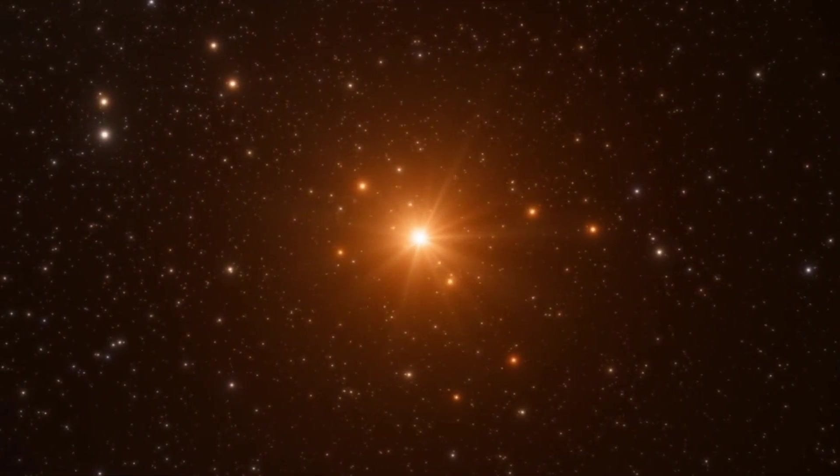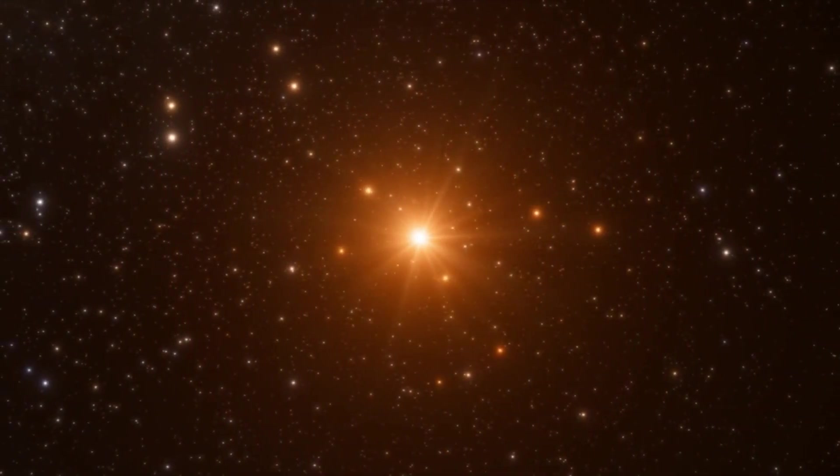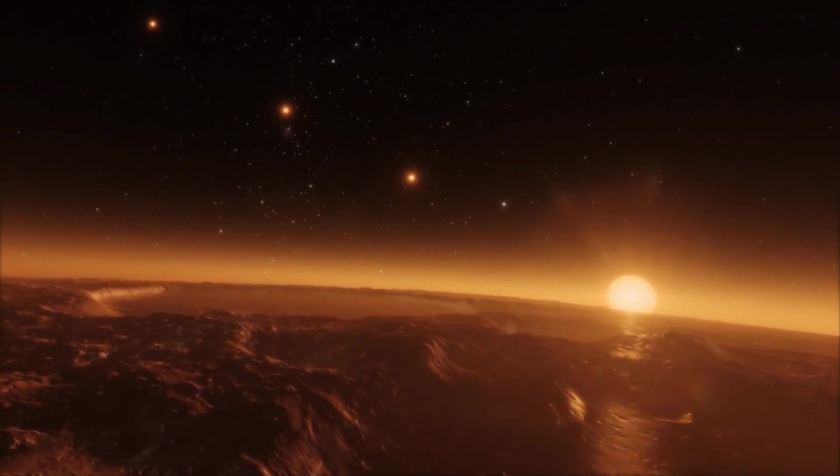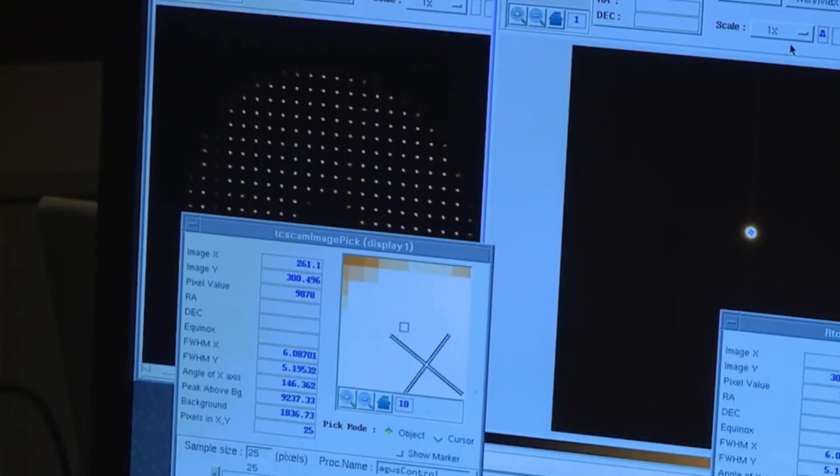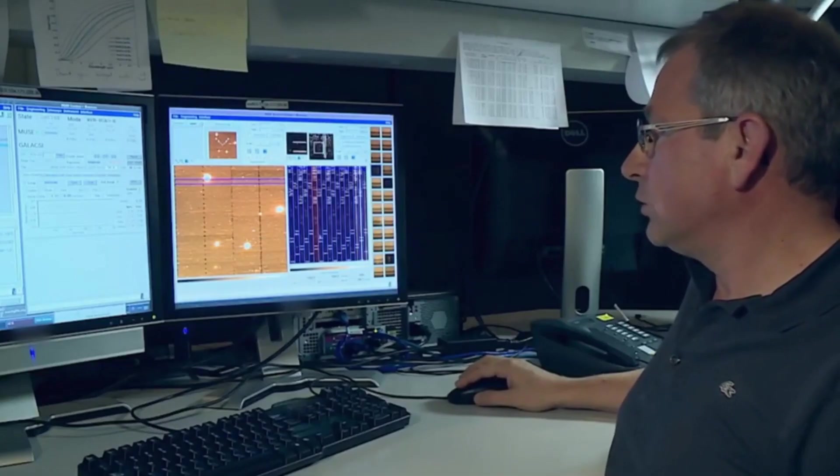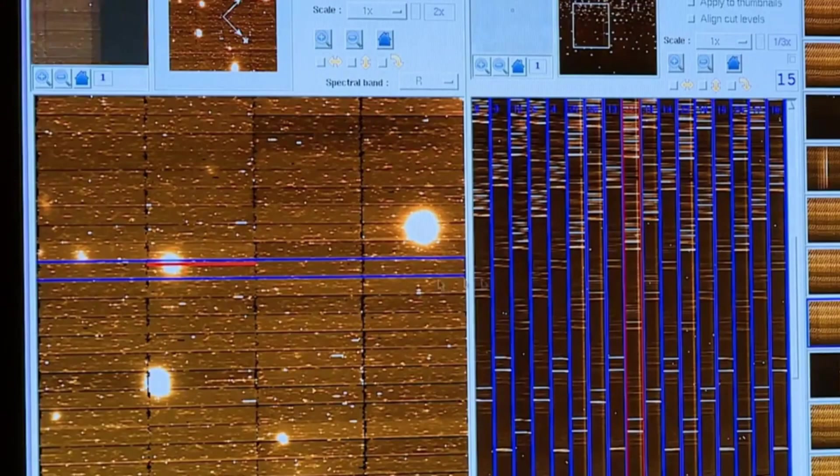It turns out that seven Earth-like planets have also been found around the star Trappist-1. More than 400 planets have been discovered using this method. Could there be a mistake everywhere?